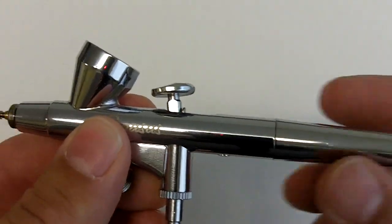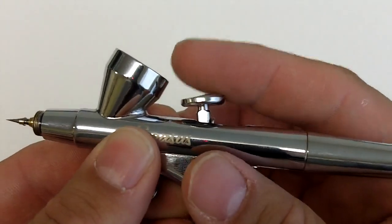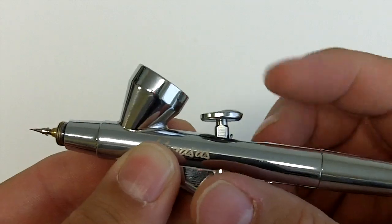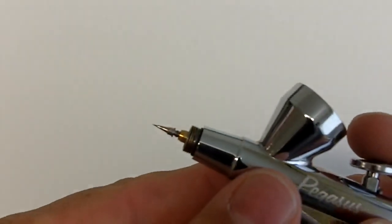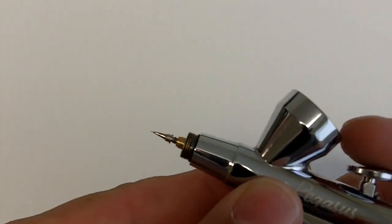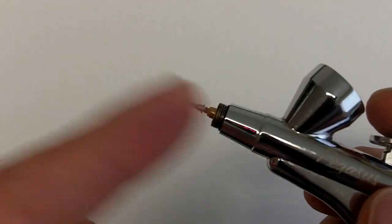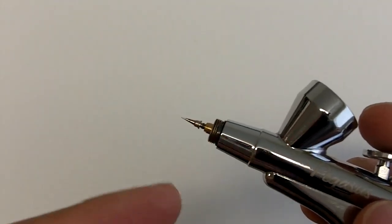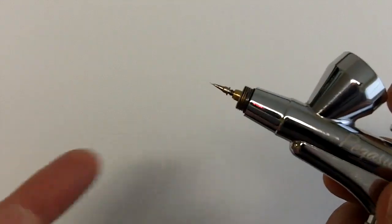Basically, the way this works is this is a spring loaded trigger, so it'll bounce back when you let go. And what that does is it moves this needle into the unit. And when it does, that basically allows the air to flow through along with the color. And that's what gives you the airbrush effect.